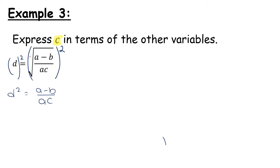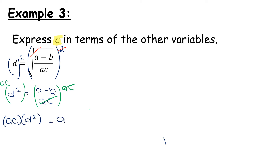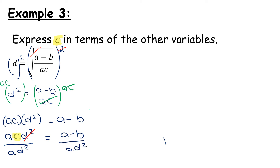So I'm left with d squared equals a minus b over ac. The square root and the square cancel each other. Now I have c underneath the line, so to get rid of the fraction, I multiply both sides by what's on the bottom. We have some cancellation, leaving ac times d squared equals a minus b. These letters written together are actually multiplied, so I can divide both sides by a and d squared. These cancel, leaving c equals a minus b over ad squared.